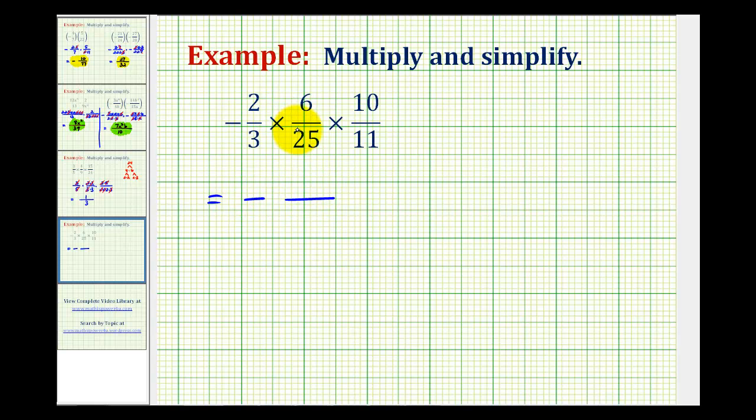We have negative two and three are prime. The prime factorization of six would be two times three. The prime factorization of twenty-five would be five times five. And for the third fraction we'd have two times five and eleven is prime.